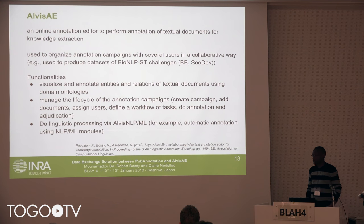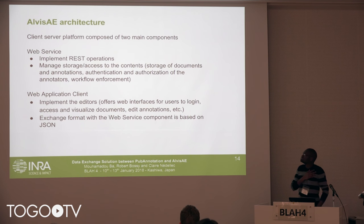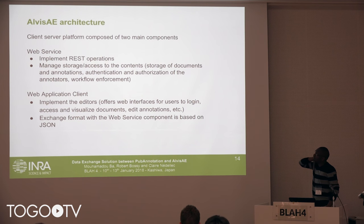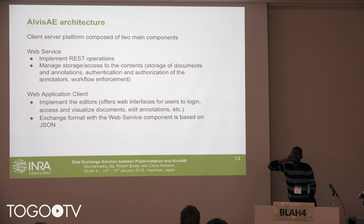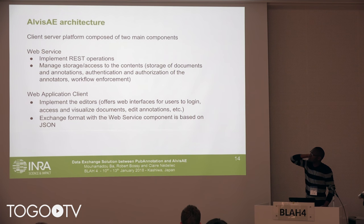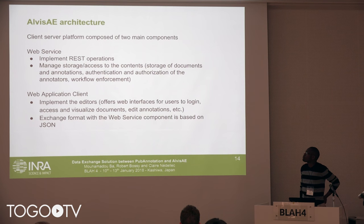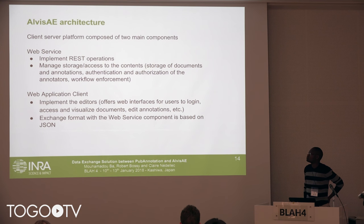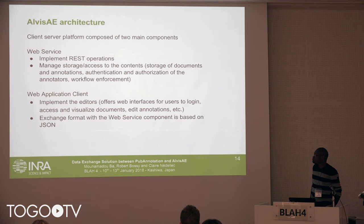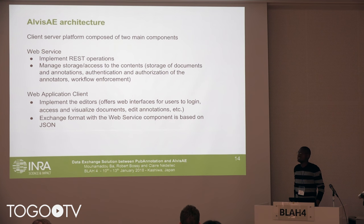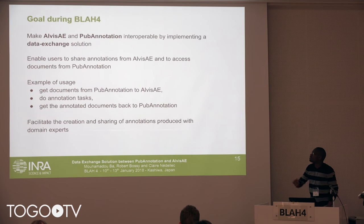For example, automatic annotation of text documents before the manual annotation done by experts. The architecture of Albicide is a client-server platform composed of two main components: a web server that implements REST operations to manage storage and access of annotation-related content, and a web application client that provides the user interface to log in, access, and visualize annotations. The two components exchange data using JSON format.